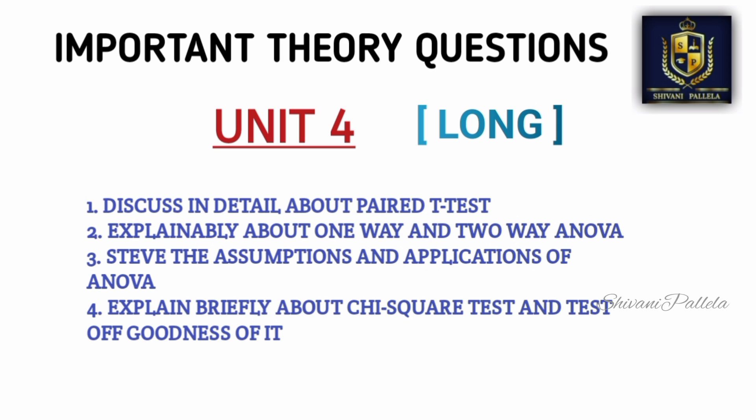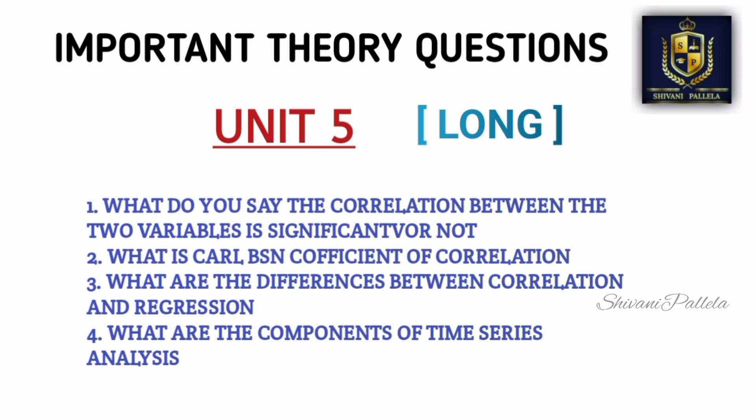For Unit 4, there are not that many chances to get a theory question. Just try to revise these questions — if there is any chance of theory, you can easily attempt it. The important theory topics from Unit 4 are: paired t-test and its assumptions, applications of ANOVA, and chi-square test. There are roughly fifty-fifty chances of getting theory here.